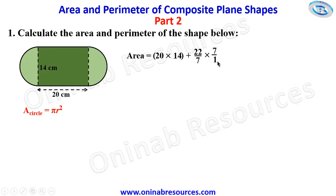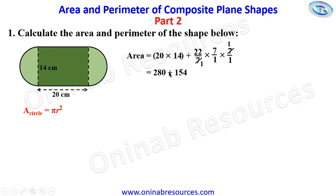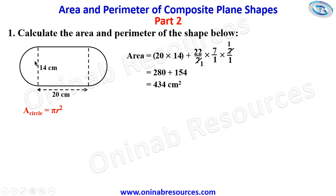So we have 22 over 7 times 7 over 1 times 7 over 1. Seven goes with 7 to give 1, and again to give 1, so we are left with 22 times 7. And 20 times 14 gives us 280, plus 154 since 22 times 7 gives 154. We add the two areas since the shape is an attachment of two semicircles to a rectangle on both sides of the breadth. Adding 280 and 154 we have 434 square centimeters as the area of the shape.